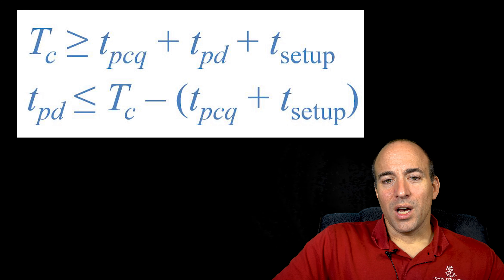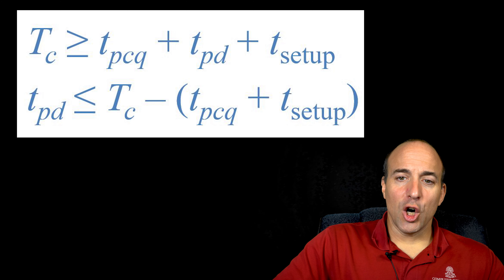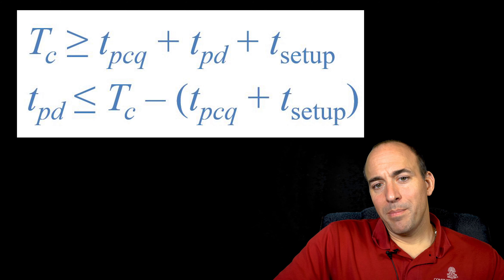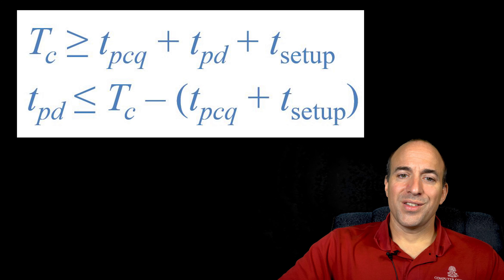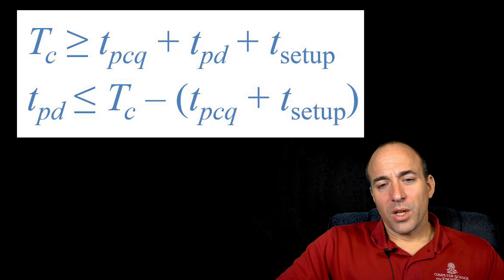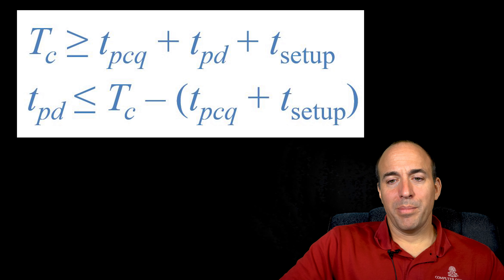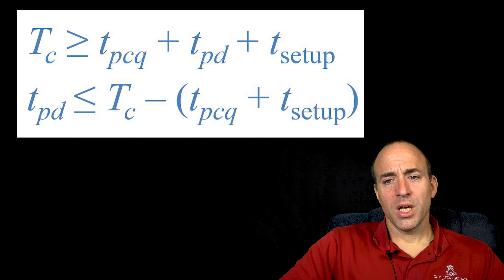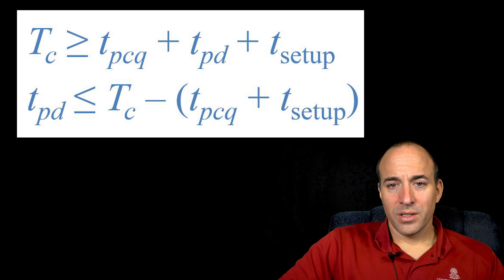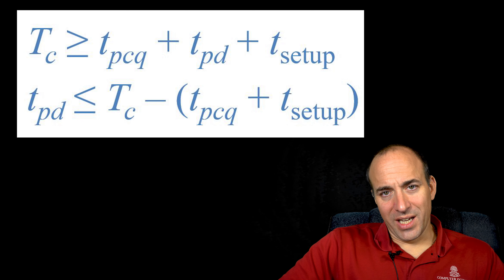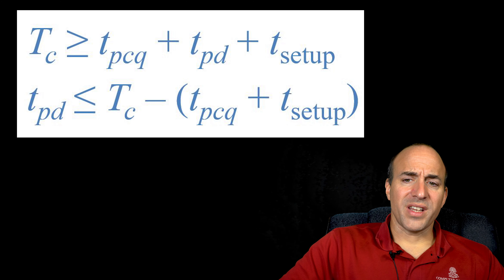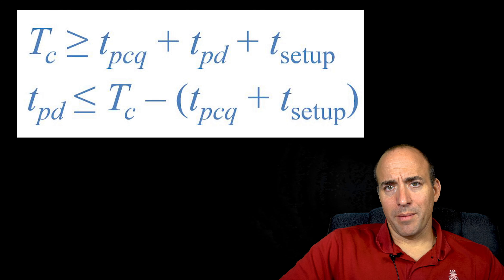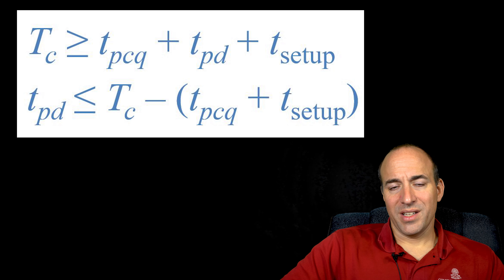TPCQ and T-setup are considered the sequencing overhead, which is an unavoidable overhead to the delays needed by the logic built between the two sequential flip-flop elements. We can rewrite the inequality to place TPD alone on one side, which serves as our design constraint when we perform synthesis from HDL to the structural design. In other words, we must design our logic to limit its propagation time to be less than or equal to the target clock period minus the sequencing overhead.